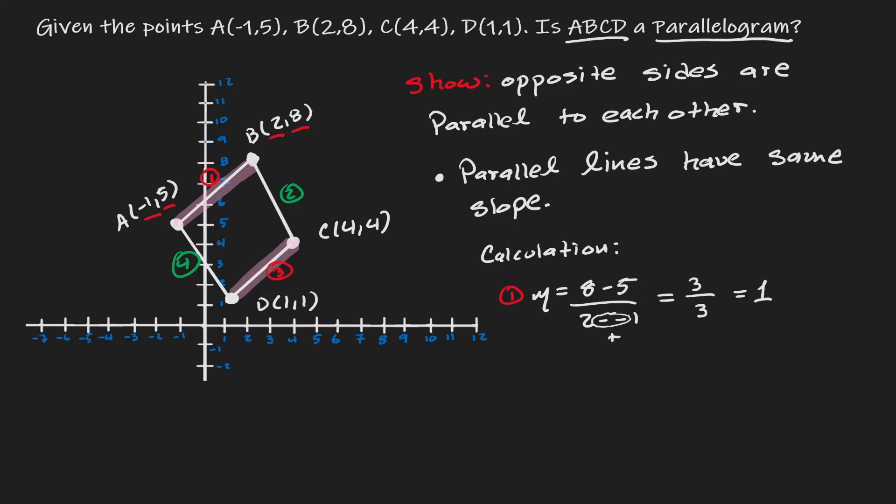Let's calculate the slope of line three. Difference of y's, so four minus one, over the difference of x's, four minus one. So we got three over three, which is one.